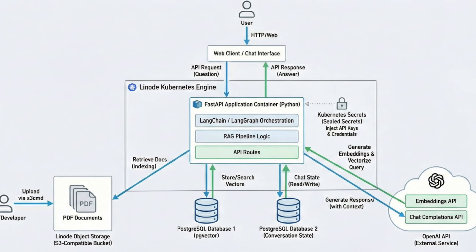We're building a RAG chatbot with evidence-based capabilities. We're going to ingest messy airline policy PDFs, vectorize them, and let an LLM answer questions like, am I entitled to a hotel if ATC caused the delay — with actual citations. We are deploying this completely via code on a managed Kubernetes service on Alchemist Cloud, using Terraform for infrastructure and just regular old Postgres for our vector storage.